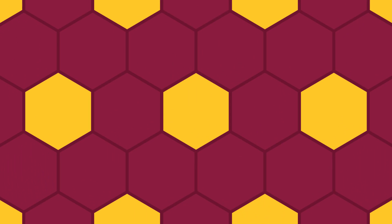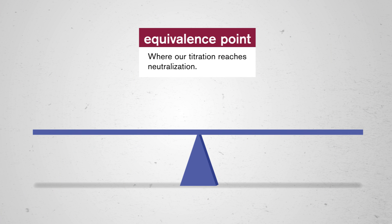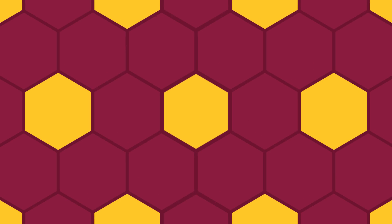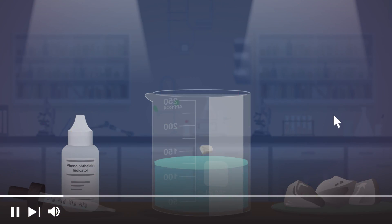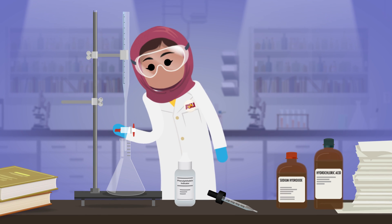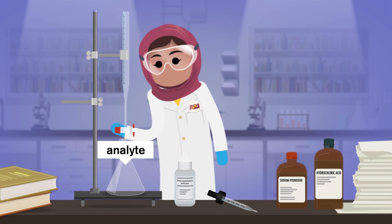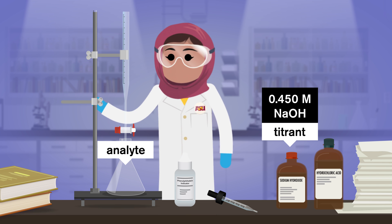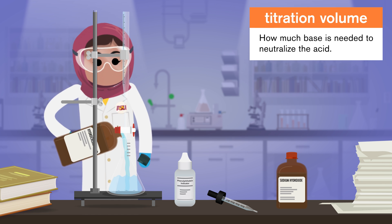We add a color indicator chemical to our unknown solution that will change colors once our solution has neutralized. We call the point where the color changes and stays that color the endpoint. At our equivalence point — exactly where our titration reaches neutralization — the solution will have the exact same amount of H-plus and OH-minus ions, and the pH will always be 7. The equivalence point and the endpoint are not the same. Usually, the color indicator won't turn until after the solution's past its equivalence point, so it's more precise to use equivalence points for calculating concentrations. Let's try a titration with hydrochloric acid and sodium hydroxide, a strong acid and strong base. We've got 21 milliliters of acid, which is our analyte — the substance with an unknown concentration. Sodium hydroxide is our titrant, meaning we do know its concentration at 0.450 molar.